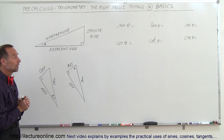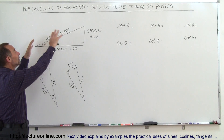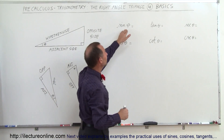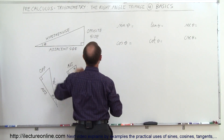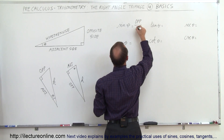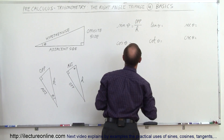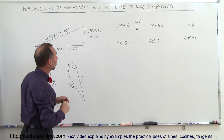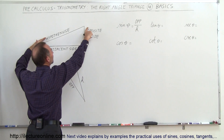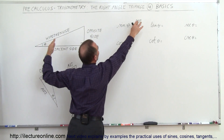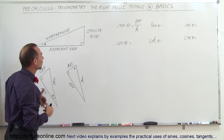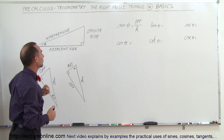Trigonometry relates these sides and angles to one another. The sine of theta, by definition, is the ratio of the opposite side divided by the hypotenuse H. It's a ratio of the lengths of two sides. Notice that if the angle gets bigger, the opposite side gets bigger, so the sine of theta increases. It's simply the opposite side divided by the hypotenuse.